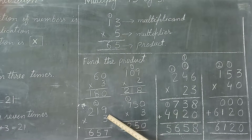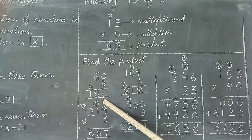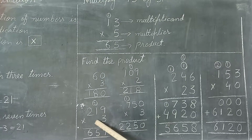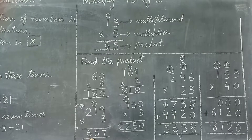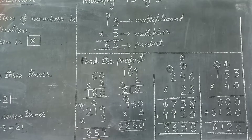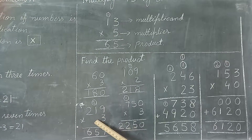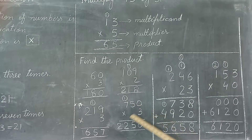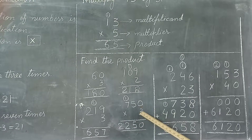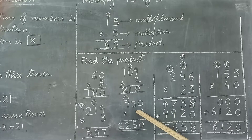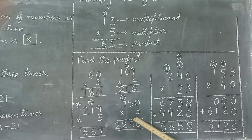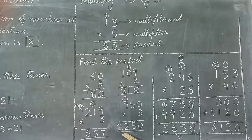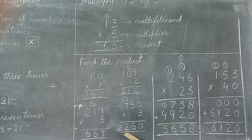Aapko pehle se pata diya gaya hai ki 0 se multiply karne par answer 0 aata hai, lekin carry ko daalna zaroori hai — 0 mein 1 plus karein to 1 aa jaayega. Now multiply hundreds digit with multiplier: 2 ones are 2. Go to next question: 219 multiplied by 3. 3 nines are 27, 2 carry. 3 ones are 3, plus carry gives 5. 3 twos are 6. So 657 is the product of 219 multiplied by 3. Come to next question: 750 multiplied by 3. 3 zeros are 0. 3 fives are 15 — 5 placed, 1 carry. 3 sevens are 21, plus carry gives 22. So the product is 2250.